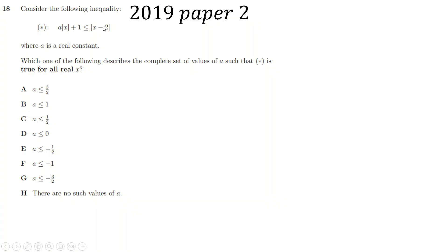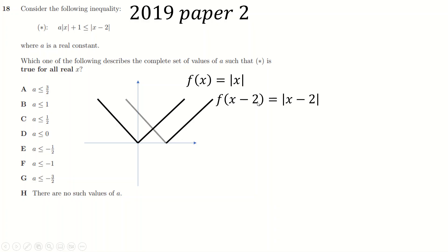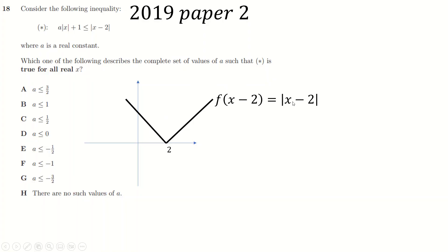What about mod(x minus 2)? My sketching method doesn't work quite as directly here because it's mod(x minus 2), not mod x. But the function mod x, when x is positive, is just the line y equals x, and when x is negative it's y equals minus x — giving the familiar V-shape. Then mod(x minus 2) is just this function shifted two places to the right, with the vertex at x equals 2. We can draw these by thinking of them as transformations.